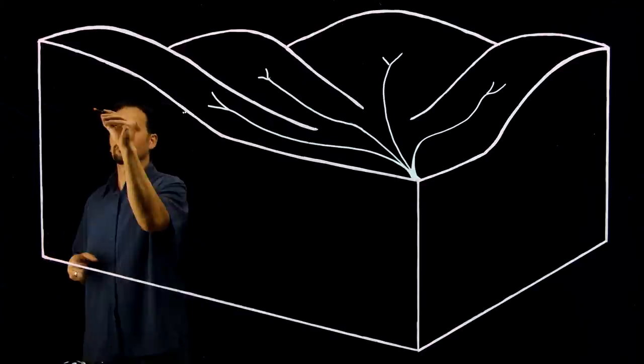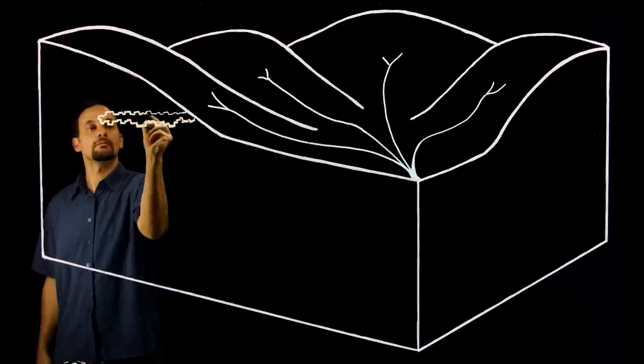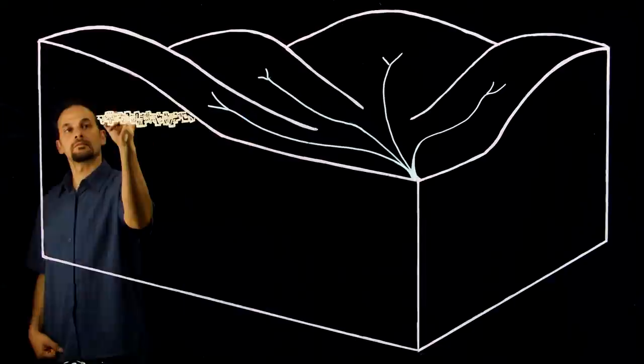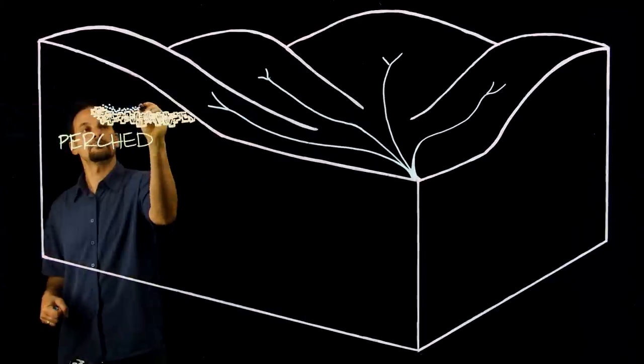You need to realize that geology is extremely variable, and there are a lot of anomalies out there, but in general there are three main types of aquifers, and the first one is called a perched aquifer.